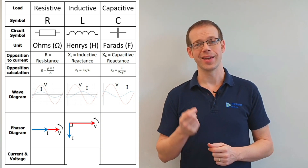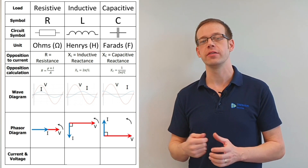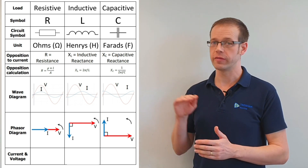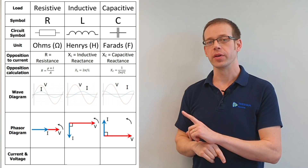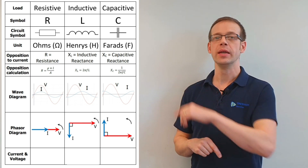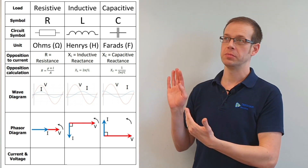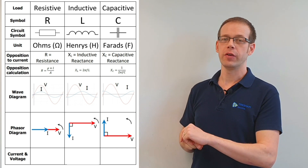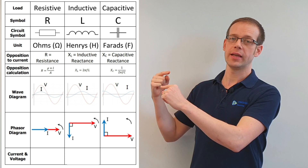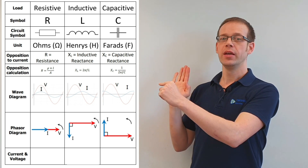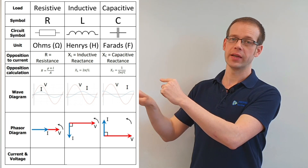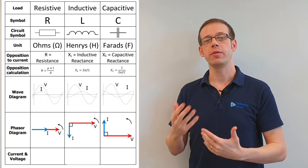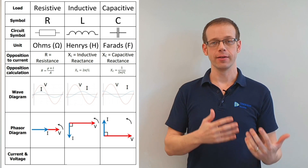In the purely capacitive load, the current arrow points straight up while the voltage remains horizontal. If you imagine the phasor rotating anti-clockwise and place your finger at roughly the 11 o'clock position, the current arrow passes your finger first, and then 90 degrees later the voltage arrow passes — representing that the current is leading the voltage.